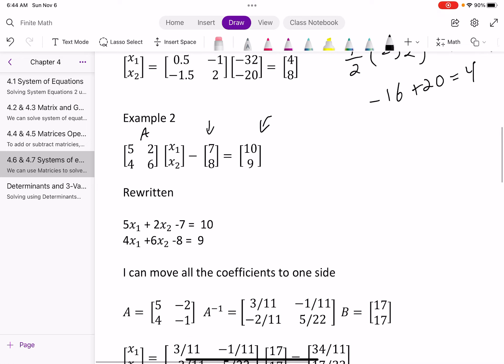I can move all the coefficients to one side to create my B, right? Because I can move him over here, which gives me 17, move him over here, which gives me 17. Remember, when you move, you do the opposite. So negative 7 becomes a plus 7, negative 8 becomes 8. And so my new B matrix is 17, 17.